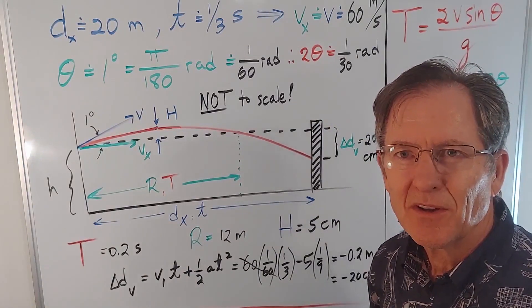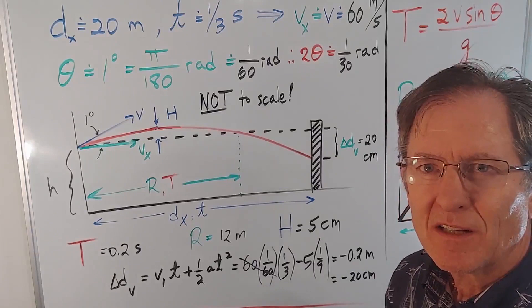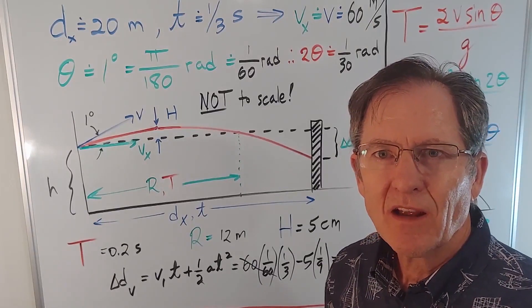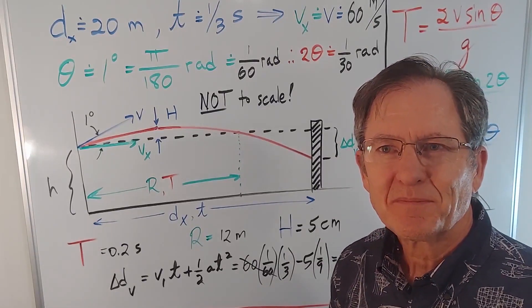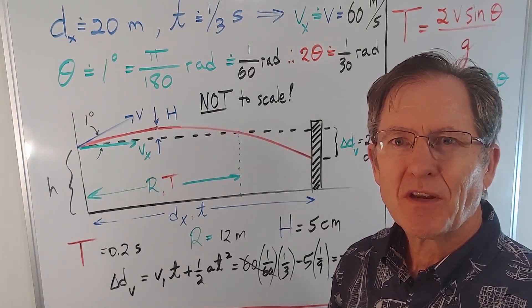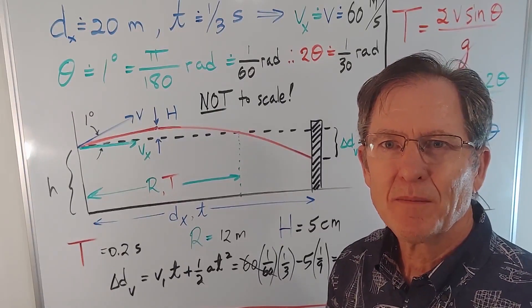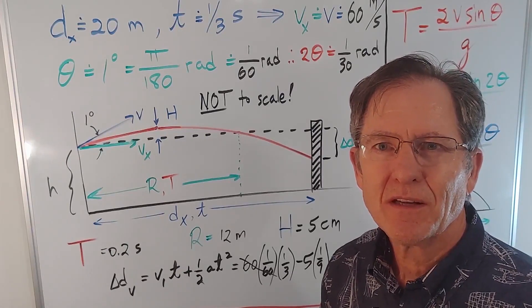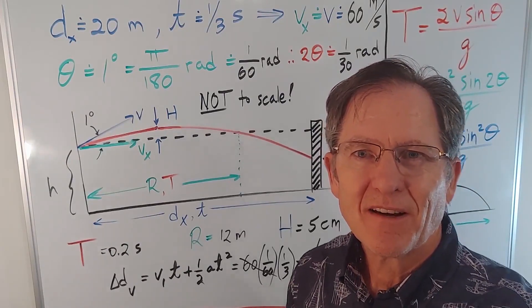So, there you have it. A very good example of projectile motion when the launch angle is almost zero. So, please, share this with as many people as you can. Get them to subscribe. Have them watch lots of my other videos. And we'll see you very soon. Take care.